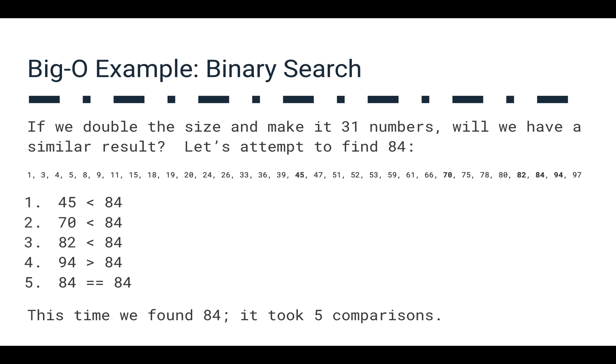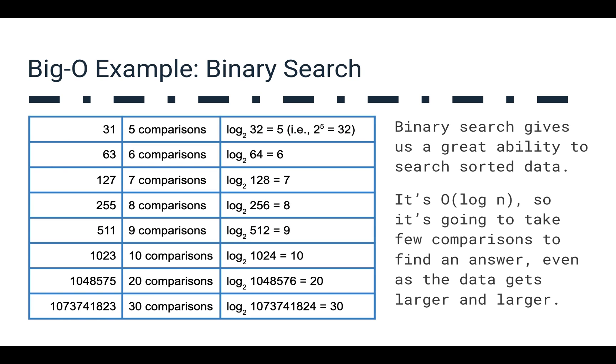If we try to find 84 in this list of numbers, and it's all sorted, so we can apply binary search, we look at the middle, and we say 45 is less than 84, and then 70 is less than 84, and then 82 is less than 84, then 94 is greater than 84, but then we find it all the way out there at the end. So that took five comparisons, and if we think about this, five comparisons is about log base 2 of 32, so that gives us, 2 to the fifth power is going to be 32. And if we keep increasing the amount of data that we apply to this, 63, 127, 255, all the way up to literally billions of values, we're going to find that we kind of scale pretty well with our solutions here. It's only going to take 30 comparisons to apply binary search to a list of a billion values.